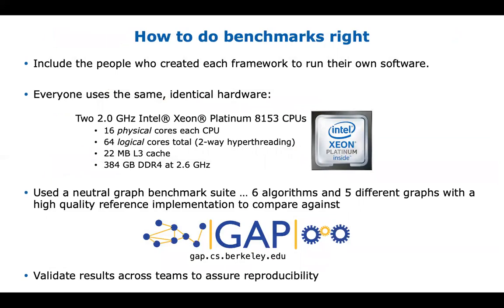In our project, we wanted to make sure every framework was run to its full advantage, so we invited the people behind each framework to run their own software. We put everyone on identical hardware — a high-end recent Xeon CPU, a pair of them, 16 physical cores per CPU, with 64 logical cores if you turned on hyper-threading. We used the GAP benchmark suite with six algorithms, five graphs, and a high-quality reference implementation. We also verified reproducible results by having teams re-run benchmarks with other systems.